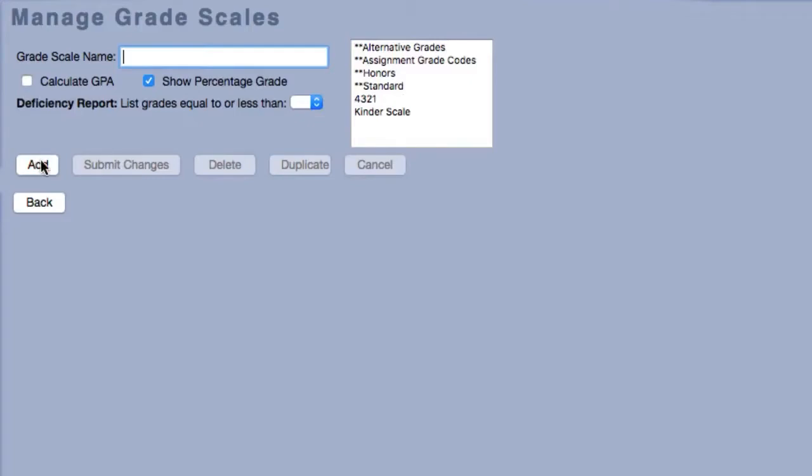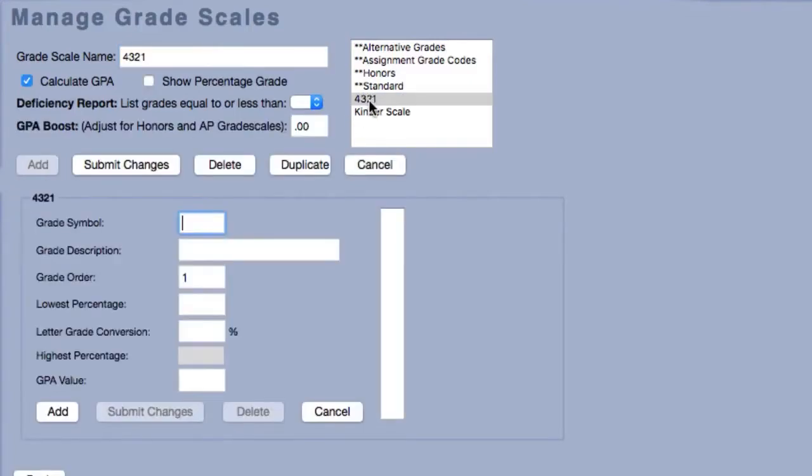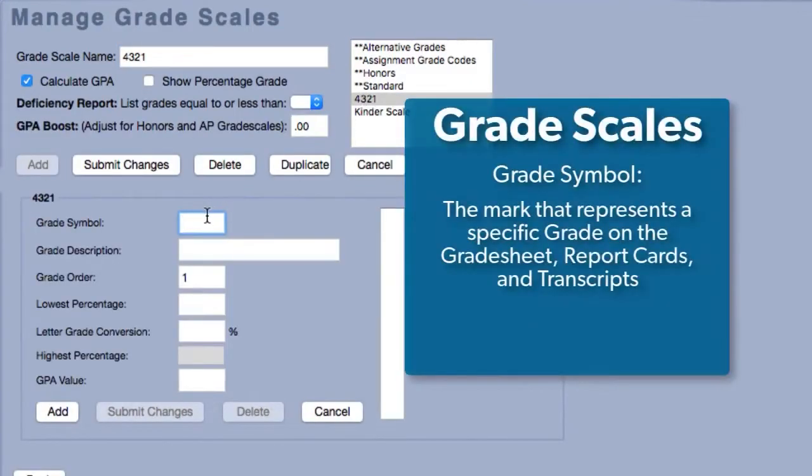Each grade in a Gradescale has several components. Grade Symbol is the mark that appears on grade sheets, report cards, and transcripts. As an example, the grade symbol for an A-plus is A-plus.